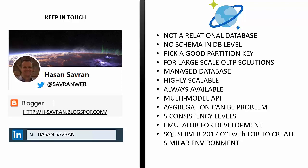Thank you, Hassan. We have a couple of questions. The first is: why do we need to select an API while creating the database, and can we use multiple APIs on the same database? You have to pick one because the architecture changes the data points depending on your API. No, you cannot use more than one API — there are some hacks but it's not recommended.